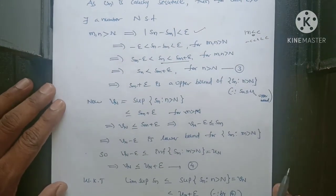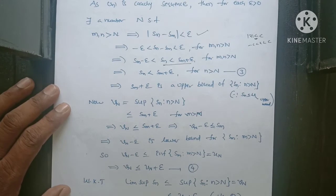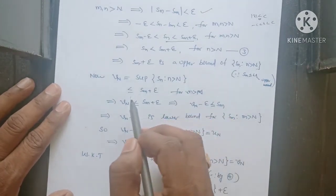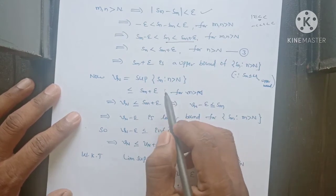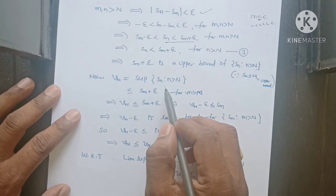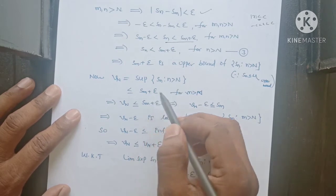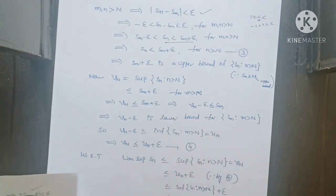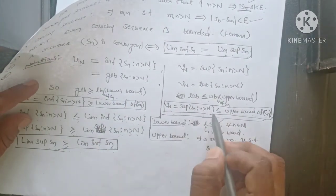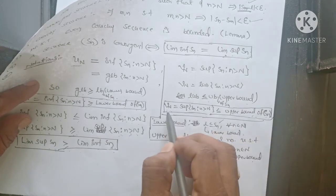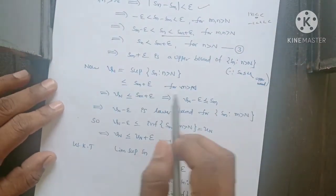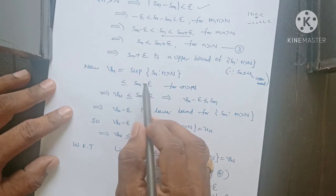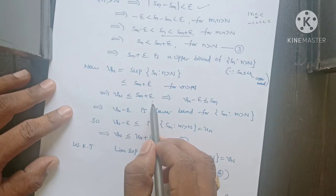The supremum of Sn is always less than or equal to the upper bound. So Vn is always less than or equal to the upper bound. For this scenario, the upper bound of the sequence is Sm plus epsilon, therefore supremum Vn is less than or equal to Sm plus epsilon.